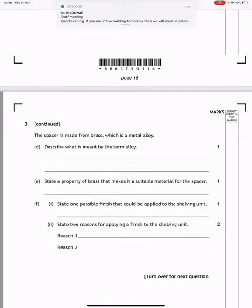The spacer is made from brass, which is a metal alloy. Describe what is meant by the term alloy. Well, an alloy is where you combine two metals together to produce another metal which has better overall properties.